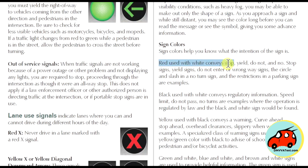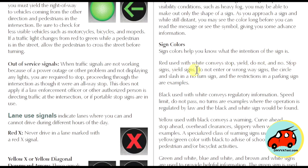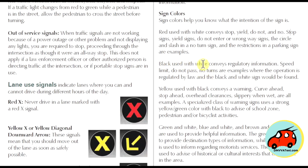Red used with white conveys stop, yield, do not, and no — examples include stop signs, yield signs, do not enter, wrong way signs, and a circle with a slash. Black used with white conveys regulatory information such as speed limits, do not pass, and no turns — these are operations regulated by law.